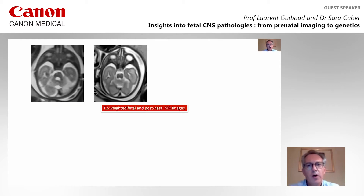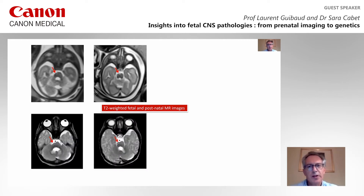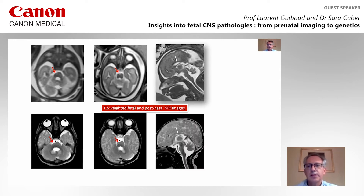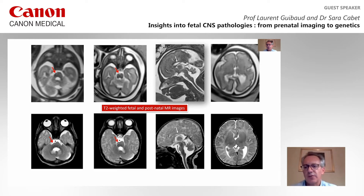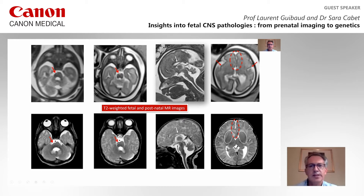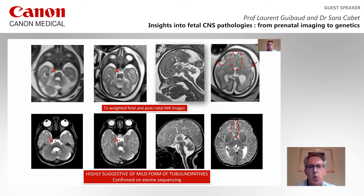This feature was confirmed on the fetal MR and also confirmed on postnatal MR images. This is the sagittal view where you can appreciate this slightly short corpus callosum, and on this axial view you see these distortions of the interhemispheric fissure as well as the asymmetry of the Sylvian fissure. A finding only seen on postnatal imaging is the lack of identification of the anterior part of the internal capsule.